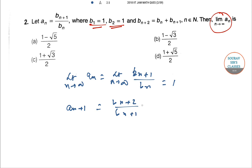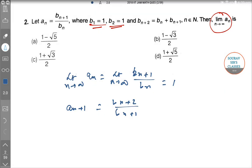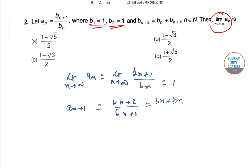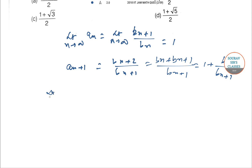And a_{n+1} is b_n + b_{n+1} by b_{n+1}, as b_{n+2} = b_n + b_{n+1}. So we can write this as 1 + b_n/b_{n+1}. Limit n tends to infinity a_{n+1} equals limit n tends to infinity 1 + b_n/b_{n+1}. So I equals 1 + 1/I.